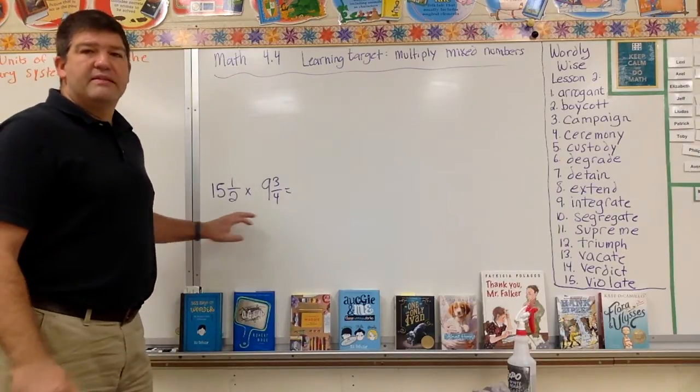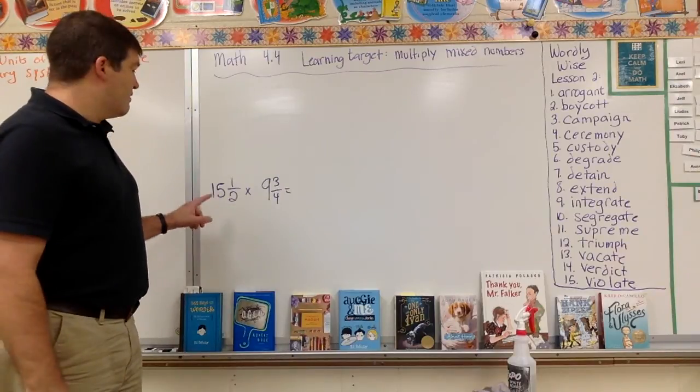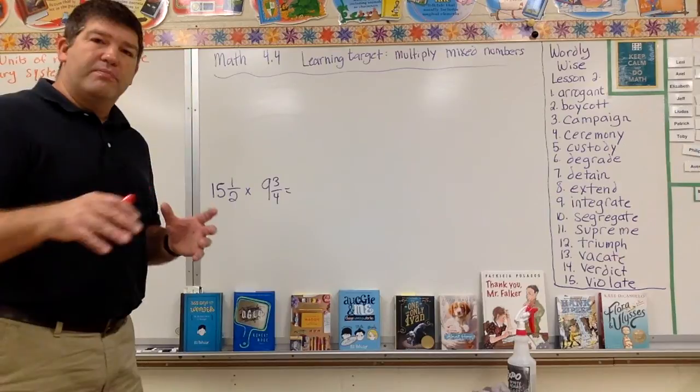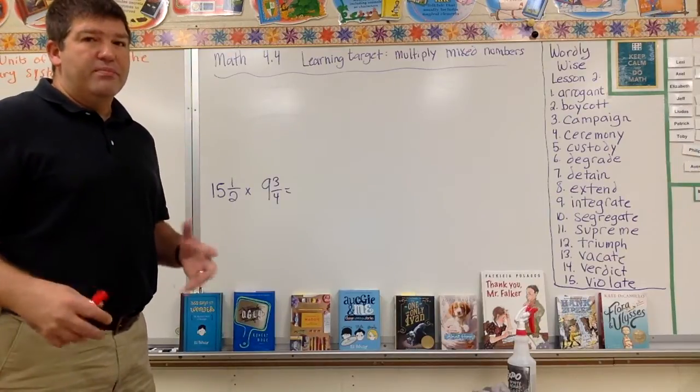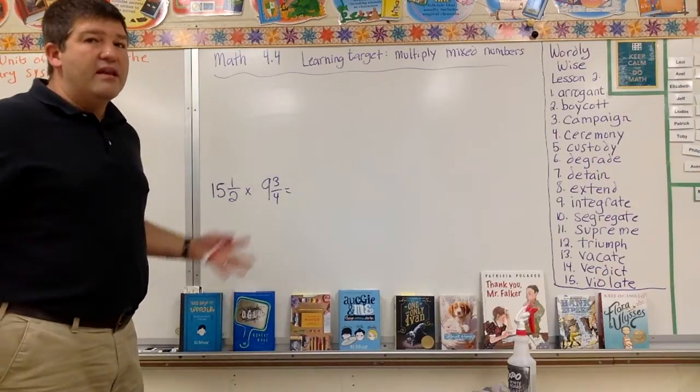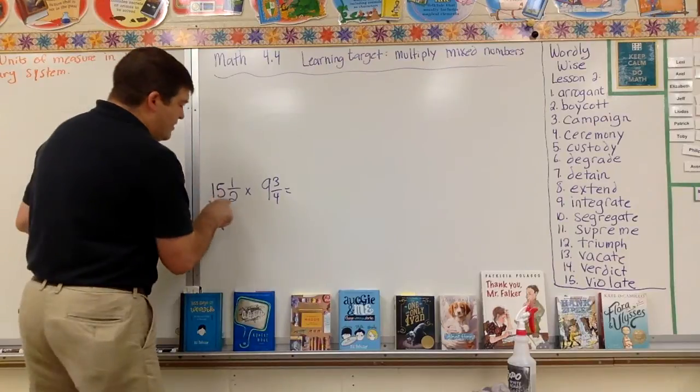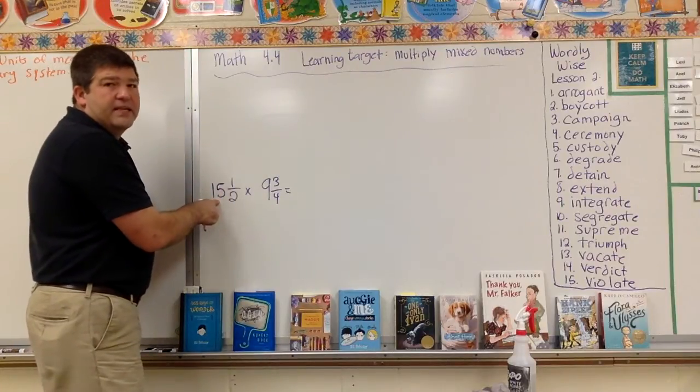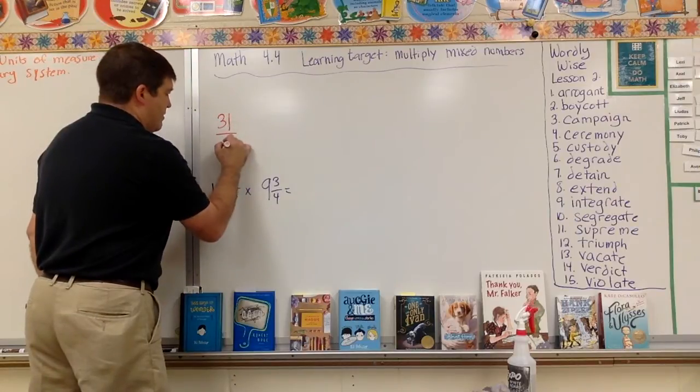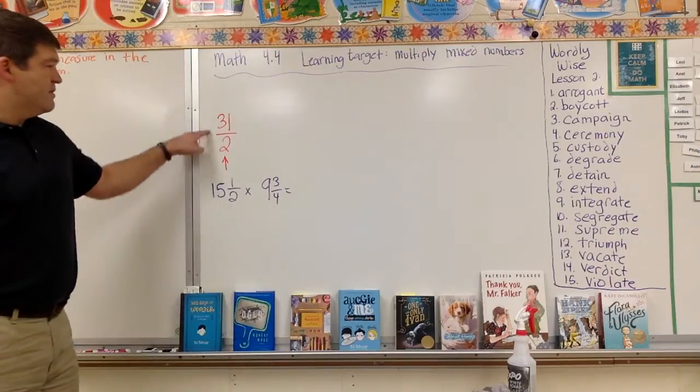Here I have a mixed times a mixed, and these are large numbers. So what I'm going to do is I'm going to convert both of these to improper fractions and then multiply across. Now because they're so big, I wanted to do a big one for you to see, now you know the system, you can do any number you want. So let's do this one first. Two times fifteen is thirty. Plus one is thirty-one. Thirty-one halves. So this is the same. This is the mixed part, mixed number.